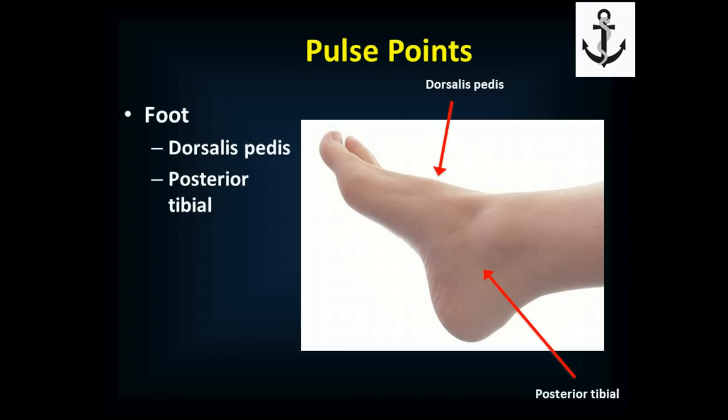On the foot, you have two pulse points. On the top of the foot, just lateral to the first metatarsal bone, is the dorsalis pedis — sometimes you have to slide your fingers around to feel it. Behind the medial malleolus on the inside of the ankle — the end of your tibia — just below and behind that is the posterior tibial pulse. The older you get, the less easy it is to find these pulses because vessels stiffen up. Don't be surprised in someone over 50-60 if you have trouble. But if you can feel them on one side and not the other, that's concerning.